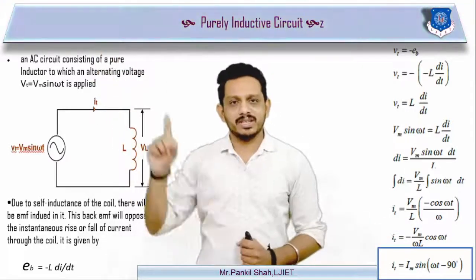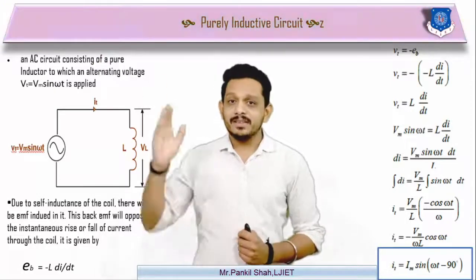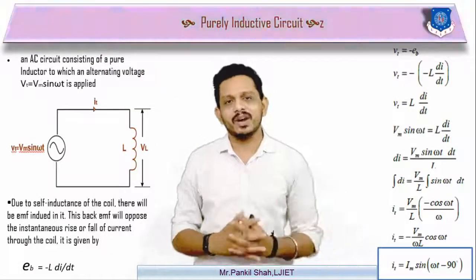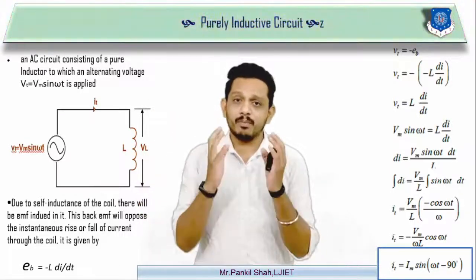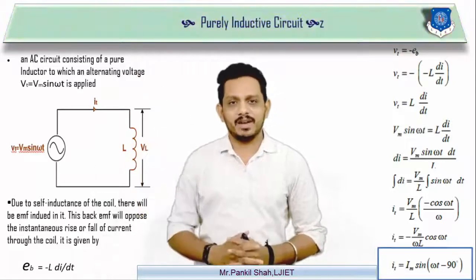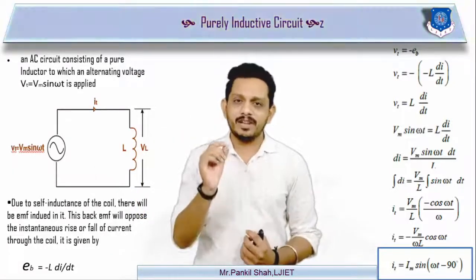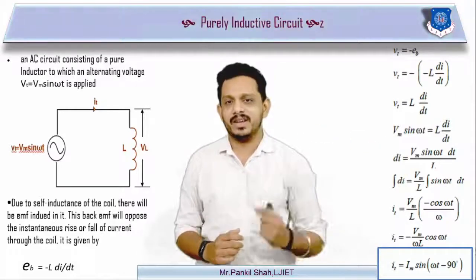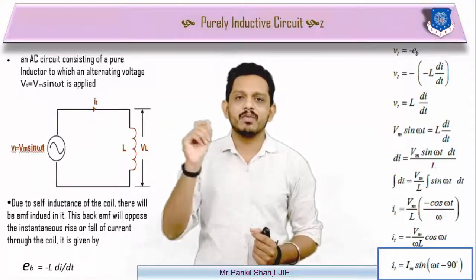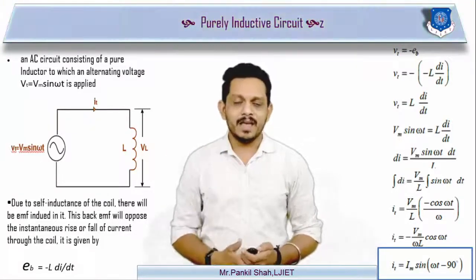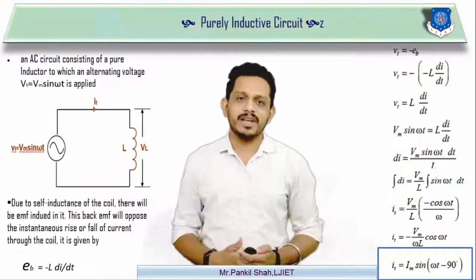Now we have both equations: voltage V(t) = Vm sin(ωt) and current I = Im sin(ωt - 90°). Looking at both equations, taking voltage as the reference, we can say that the current lags behind the voltage by 90 degrees, because of the -90° term in the current equation. Let's now draw the waveform and phasor diagram of the voltage and current.